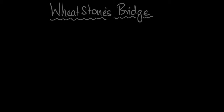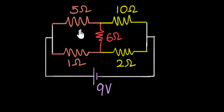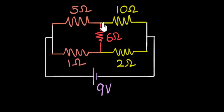I want to introduce to you a very special circuit called the Wheatstone's Bridge. I'm going to talk about the logic behind this particular circuit. Wheatstone's Bridge is a circuit that contains four resistors — we call them the four arms of the bridge — and there is a resistor in between. So this is a Wheatstone's Bridge.